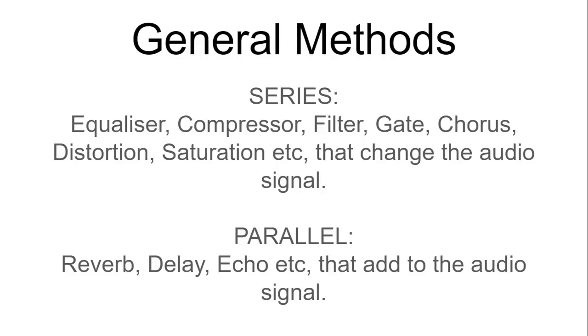Here are some general methods for series and parallel. In series we normally can put equalizers, compressors, filters, gates, chorus, distortion, saturation, etc. that change the audio signal from its input to its output. And some parallel method would be like reverbs, delay, echo, etc. that add to the original audio signal.